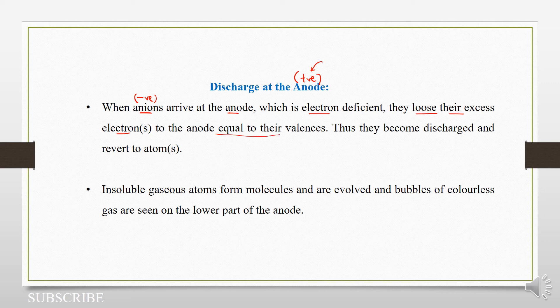Take an example. If maybe you have a negatively charged ion, say X⁻. When it reaches the anode, it will have to lose its electron — minus one electron — to form an atom of X.